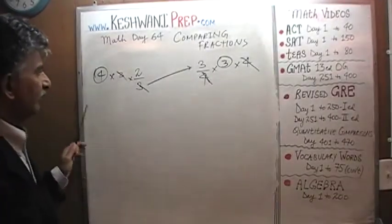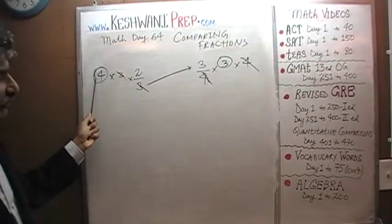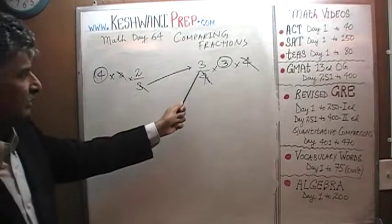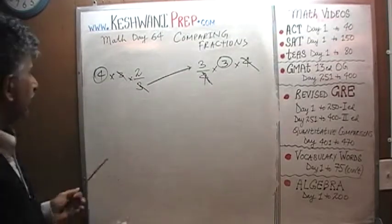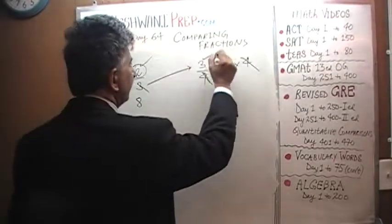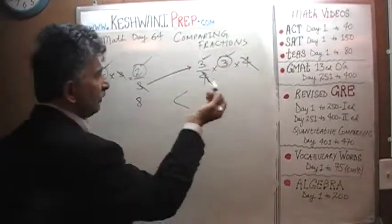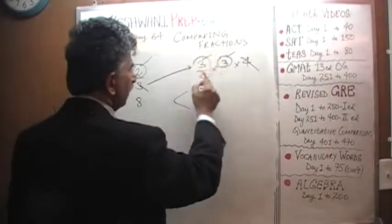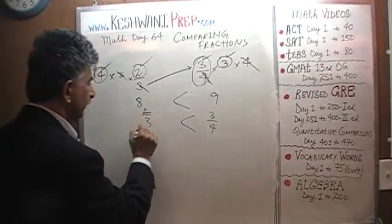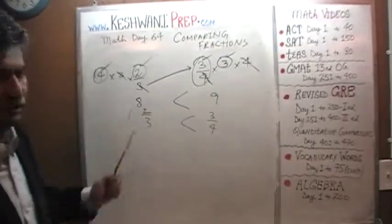Essentially, the four from the bottom on the right-hand side appears on top on the left-hand side, and the three from the bottom on the left-hand side appears on top on the right-hand side. We are now comparing 4 times 2, which is 8, versus 3 times 3, which is 9. Since 9 is more than 8, three-quarters must be more than two-thirds.